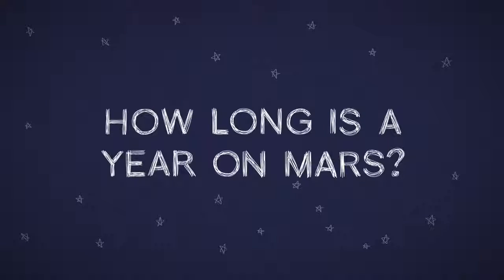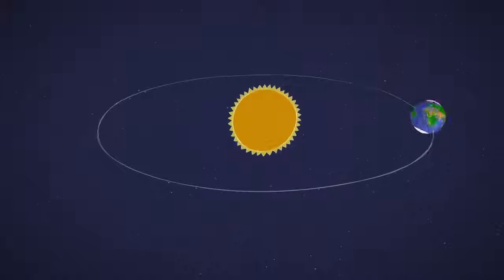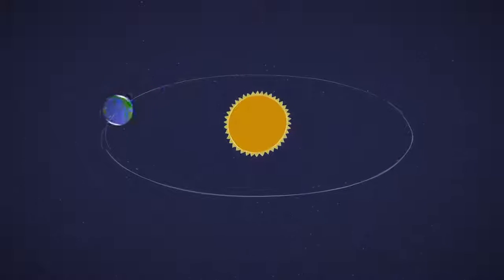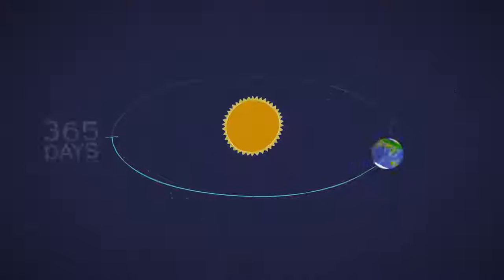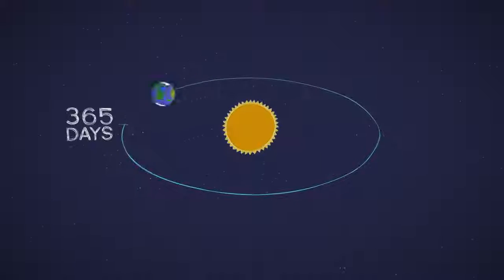How long is a year on Mars? The Earth zips around the Sun at about 67,000 miles per hour, making a full revolution in about 365 days, one year on Earth.